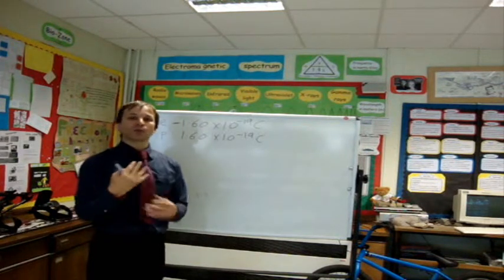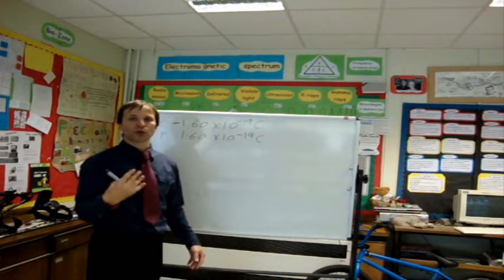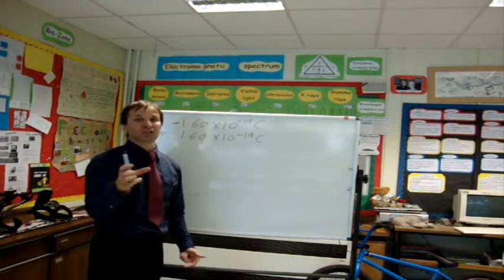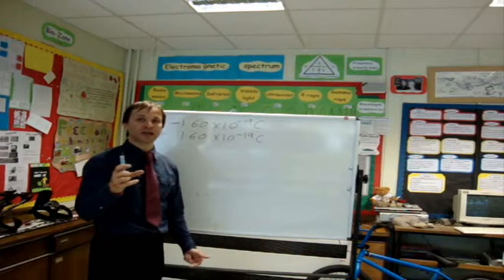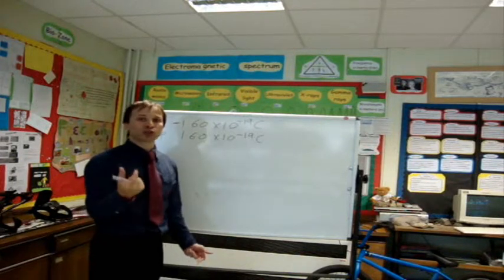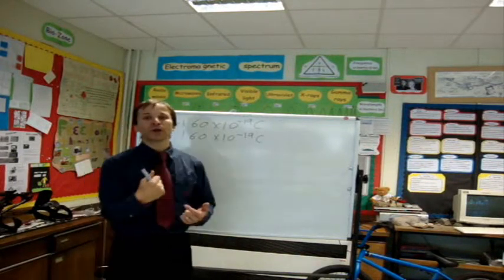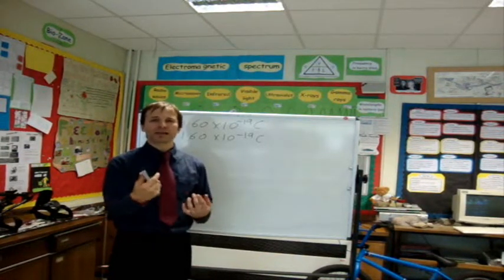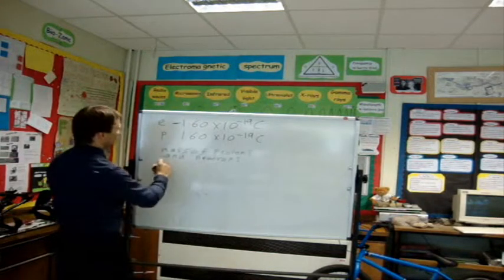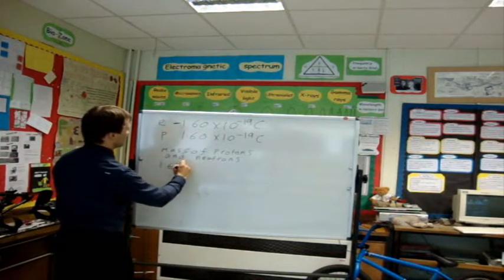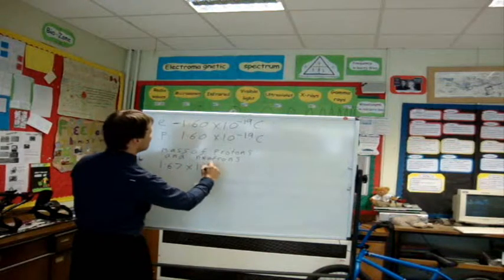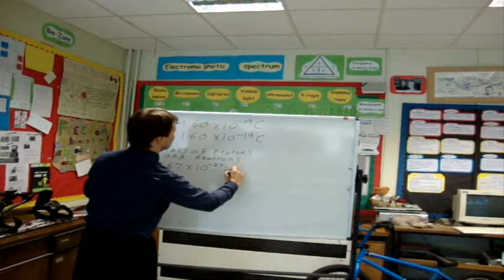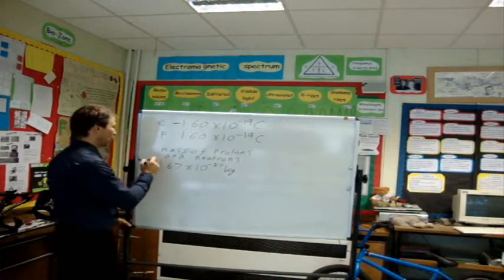Right, so the mass of protons and neutrons all together, they're going to be the same mass. Now, we know they're very slightly different because they've got slightly different quark combinations inside. But for the purposes of charge to mass ratios and all the other different things that you have to do in calculating masses, we're just going to use the standard mass, which is 1.67 times 10 to the minus 27 kilograms. So really, really tiny, small amount.